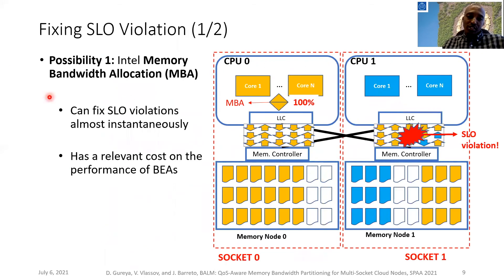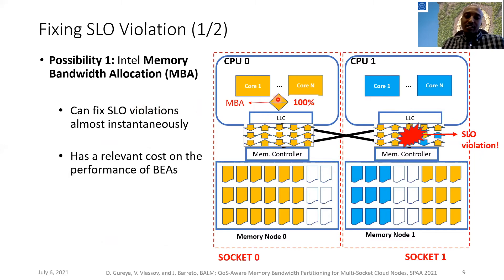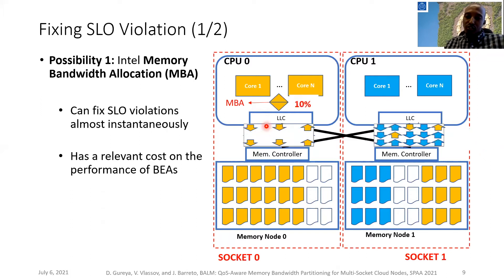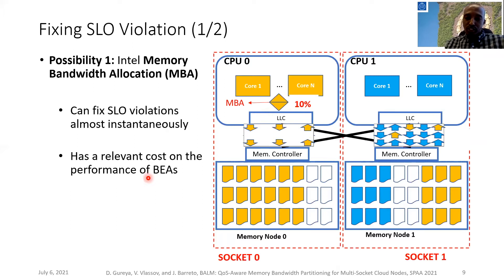One possibility is to use Intel's recently released memory bandwidth allocation mechanism, MBA. MBA provides an approximate and indirect per-core control over memory bandwidth. In this example, we can use MBA to throttle the memory bandwidth of best-effort applications from 100% to 10% to fix the SLO violation. This solution is fast because it is hardware-based, but it has a relevant cost on best-effort application performance — it unnecessarily throttles local memory bandwidth instead of just throttling the remote memory bandwidth.